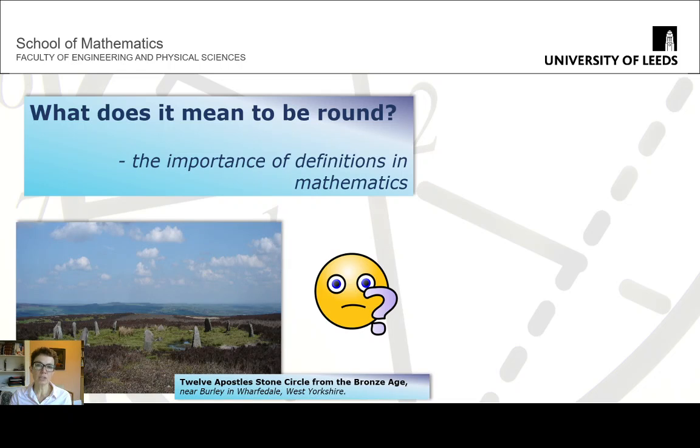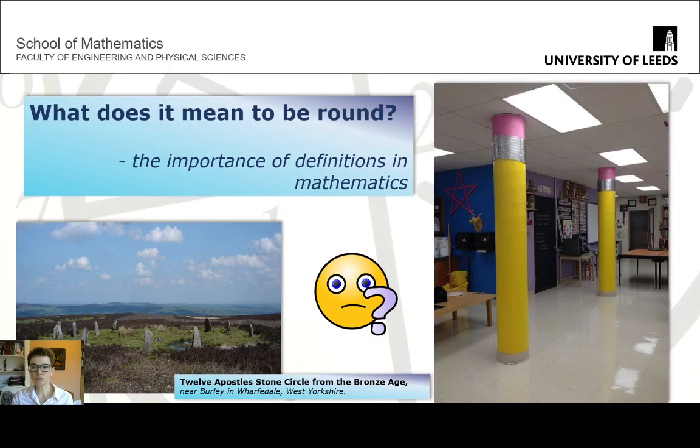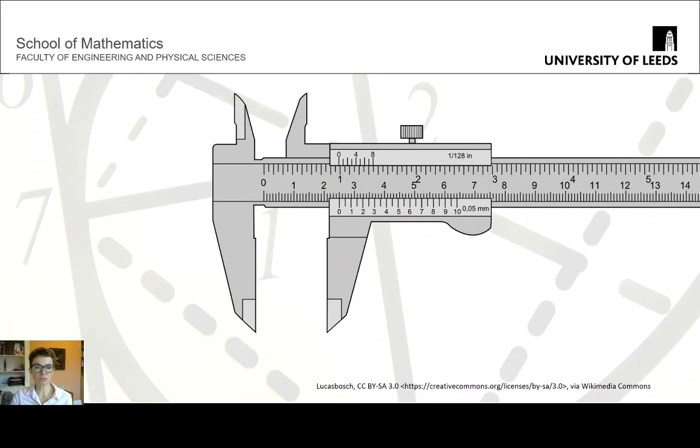Let's suppose you walk through the Yorkshire countryside and you find one of these ancient stone circles, and you want to check whether this is really a circle. Or suppose you walk into a hallway and you see some nice pillars there in these pencil shapes, and you want to check whether the cross-section of these pillars are circles. The first thing you might think of when you want to check whether something is round is you might take out some calipers, and maybe measure the width at certain angles all around.